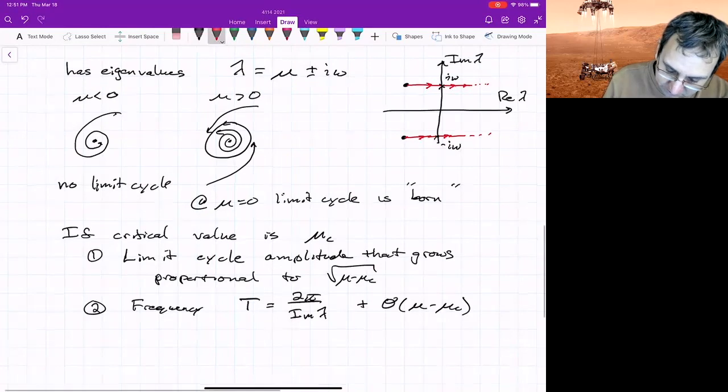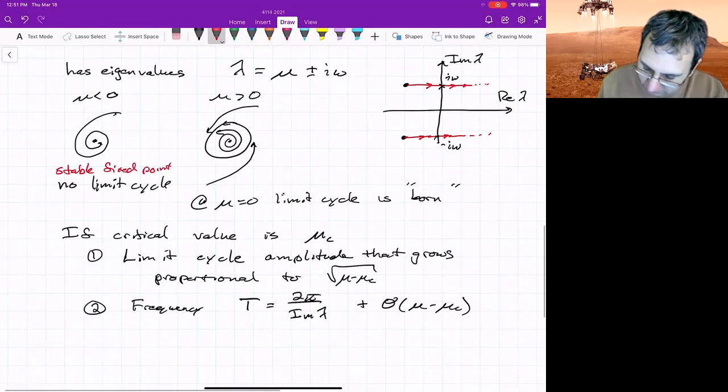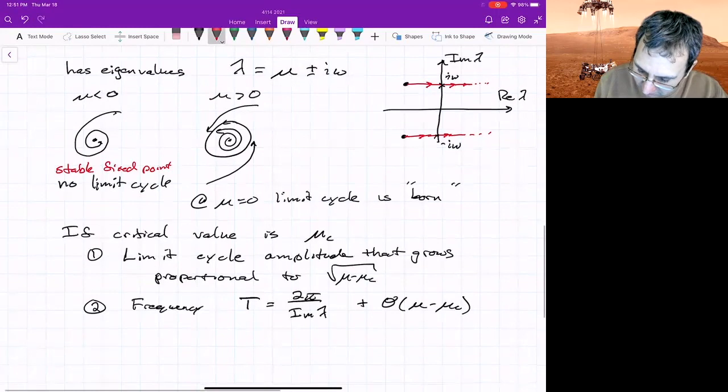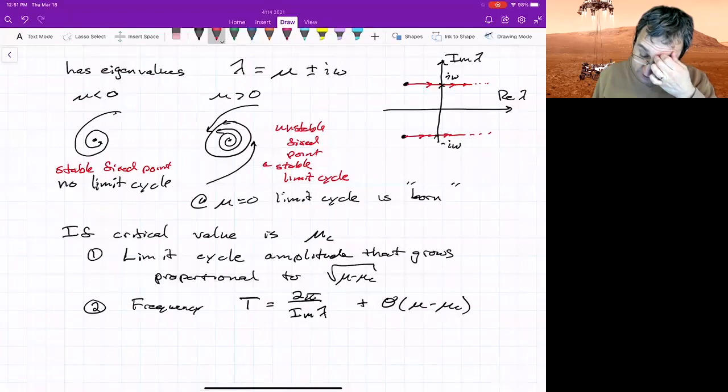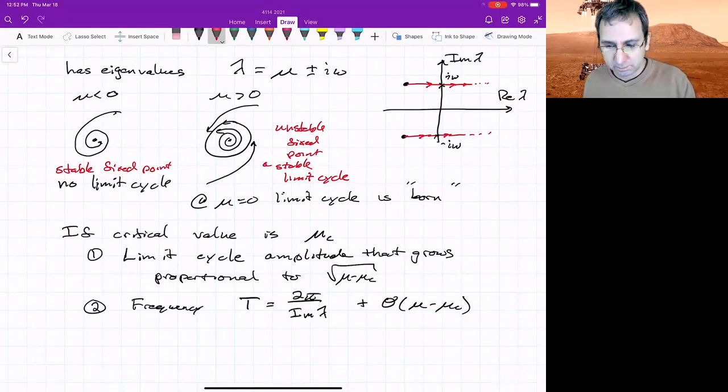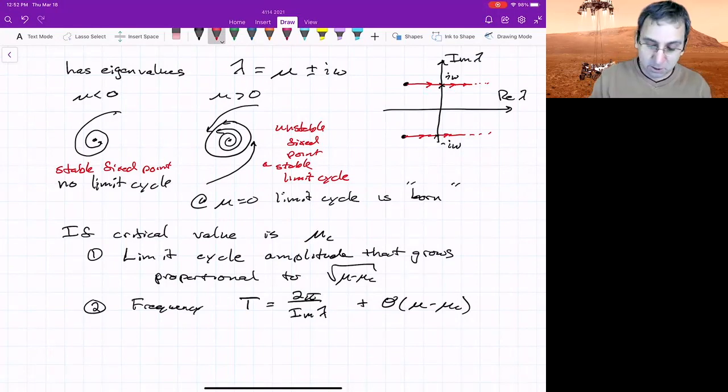So we have a stable fixed point and no limit cycle. And then after this, we have an unstable fixed point and stable limit cycle. And it's the stability of the limit cycle that leads to the name supercritical. So in this case, the mu greater than zero had the stable limit cycle, but you could also come up with something where the stable limit cycle would be there for mu less than zero, and there'd be no limit cycle for positive mu. So the supercritical is related to the stability of the fixed point that shows up.